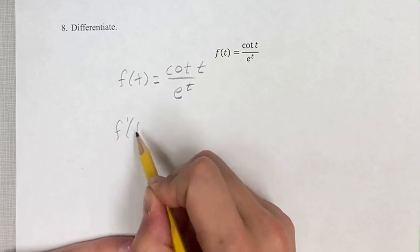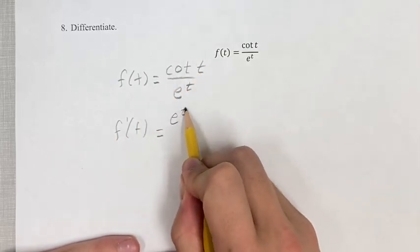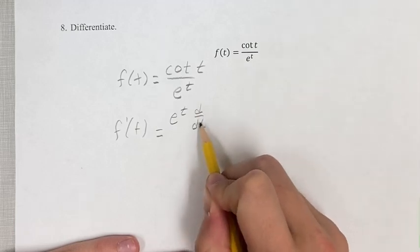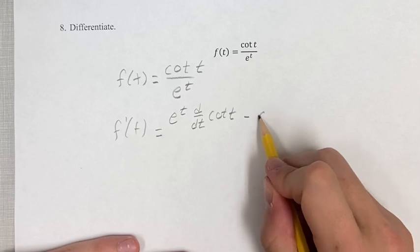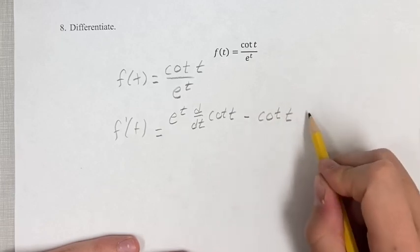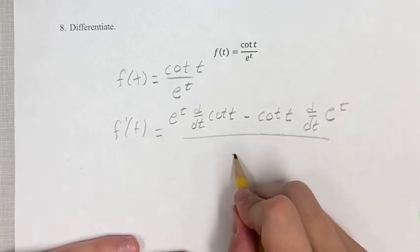Our derivative, we're going to use the quotient rule, so it's going to be the denominator times the derivative of the numerator, minus the numerator times the derivative of the denominator, all over the denominator squared.